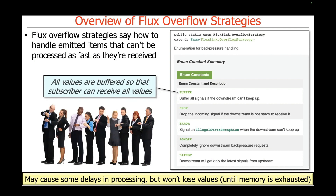The first one is the buffer model. Basically, if data is getting here faster than we can send it downstream, just put them in a queue, put them in a buffer somewhere, and eventually they'll get a chance to go downstream when the downstream can accept them. This can cause some delays in processing, but values won't be lost up until the point when you exhaust all memory. So it could delay things a bit, but it'll keep their place in line until you run out of ways to buffer them.